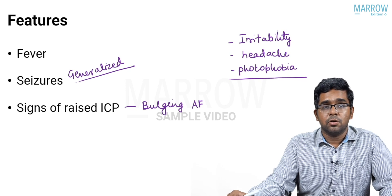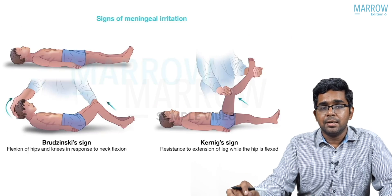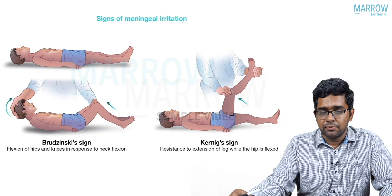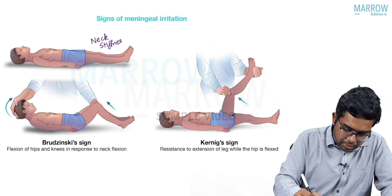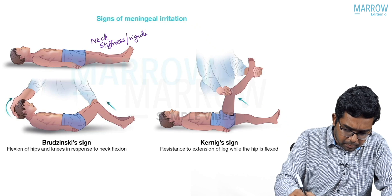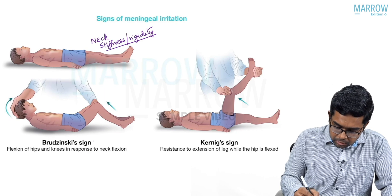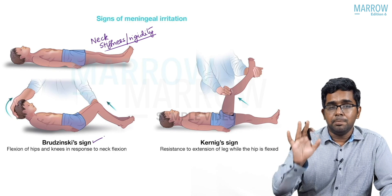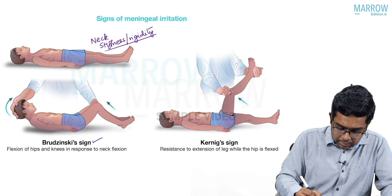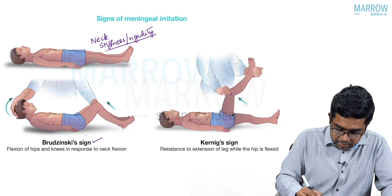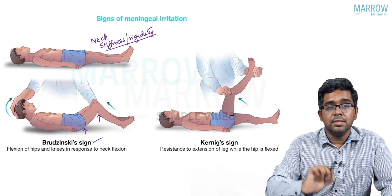You can also have signs of meningeal irritation. First, the child can keep the neck very stiff — what we call neck stiffness or neck rigidity. Second is Brudzinski's sign: you passively flex the neck of the child, and reflexively the hip and knee will flex. You can notice the hip flexing as well as the knee flexing — this is Brudzinski's sign.